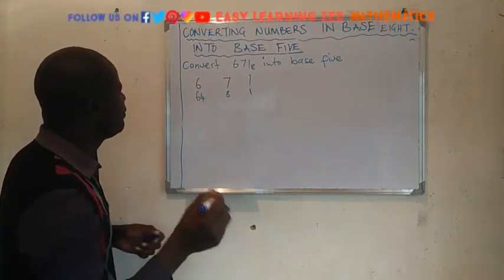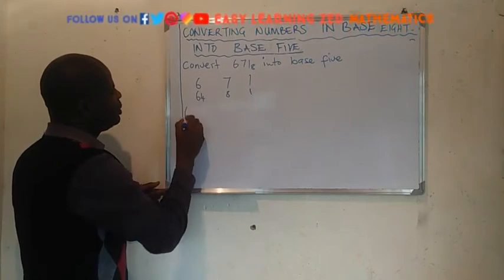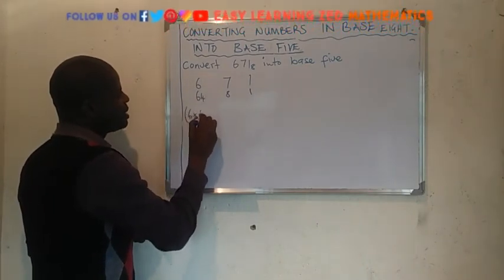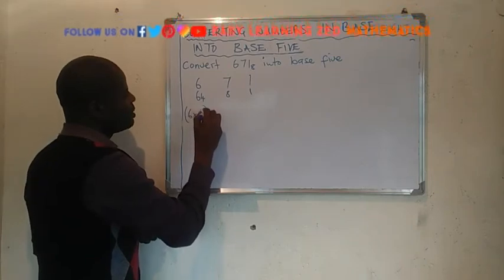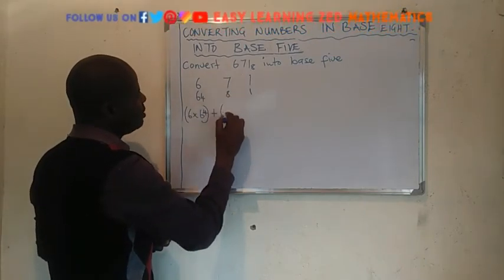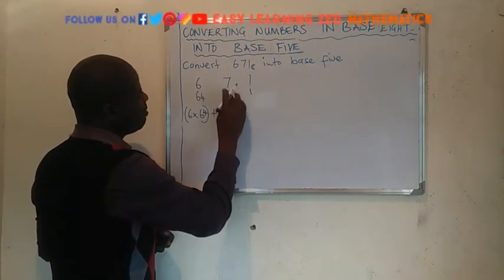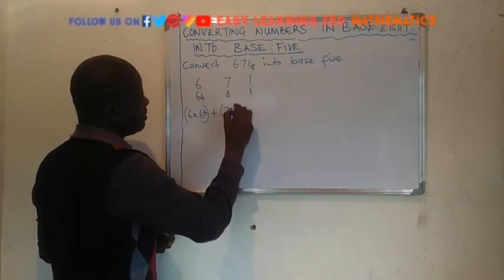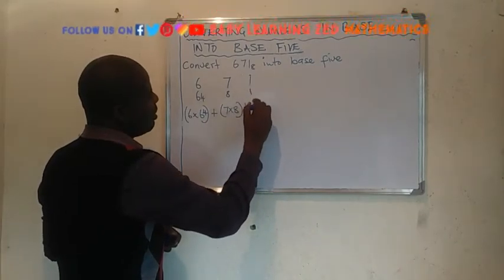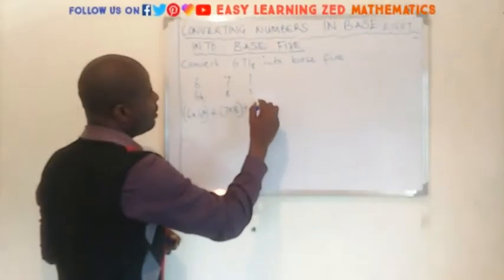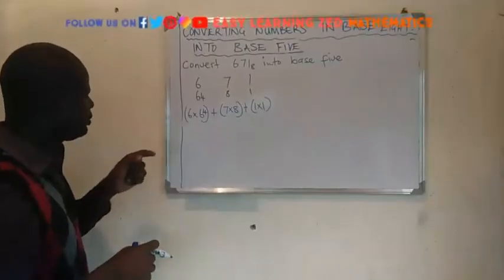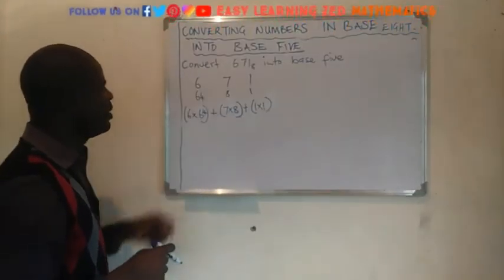Since we have identified the place values, what we are going to do now is we are going to multiply each digit by its place value, which is 6 by 64, then plus 7 by its place value which is 8, then we add 1 by its place value, which is 1.